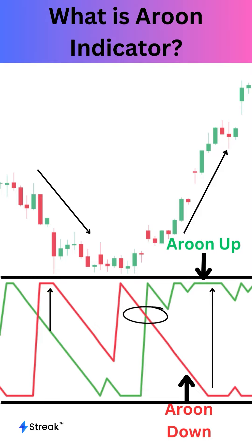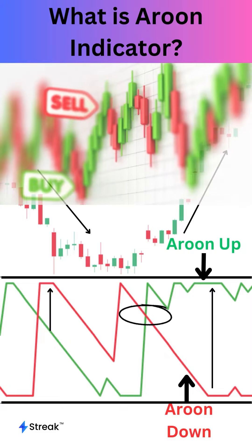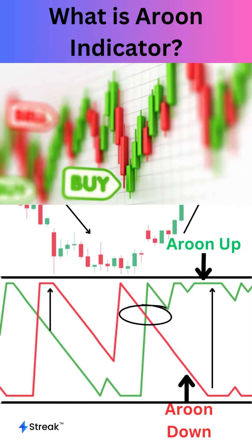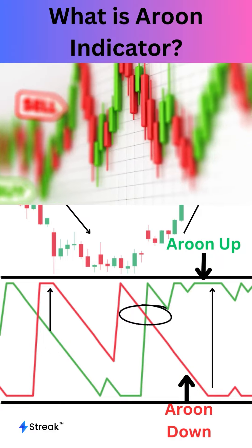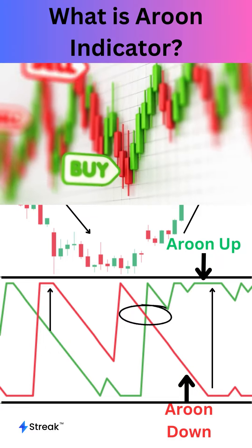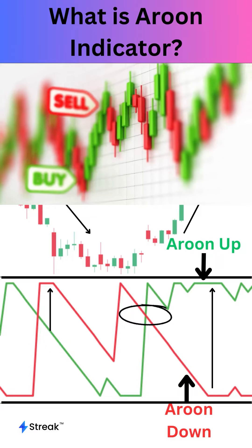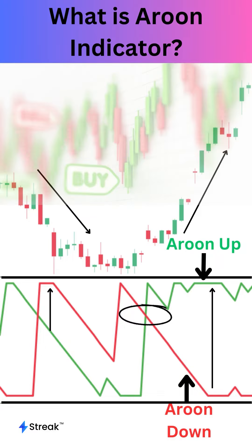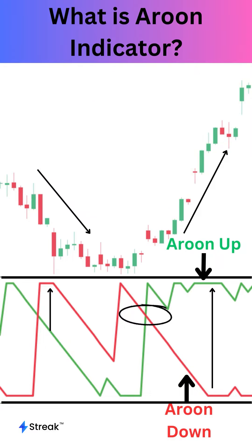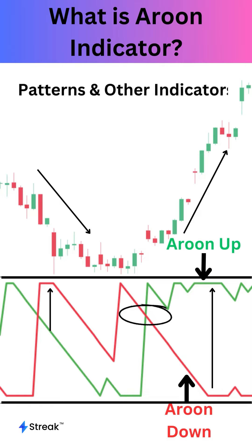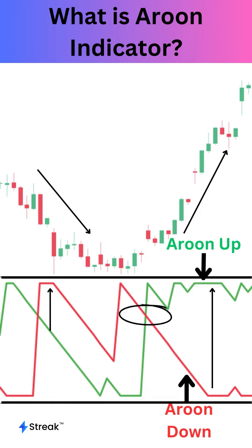A crossover of the two lines indicates a possible trend reversal. The Aroon indicator can help traders spot opportunities to enter or exit trades based on the trend direction and momentum. The indicator can be combined with other technical analysis tools such as patterns to increase the probability of success.